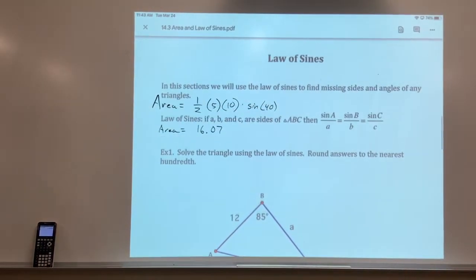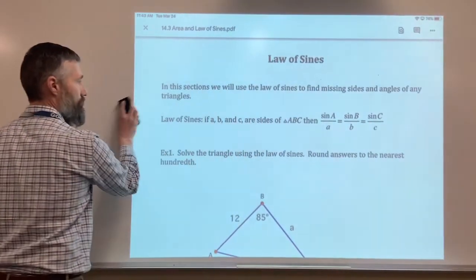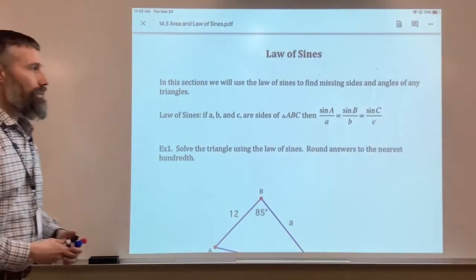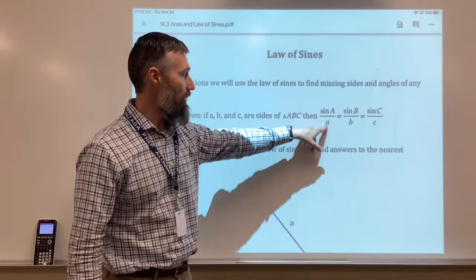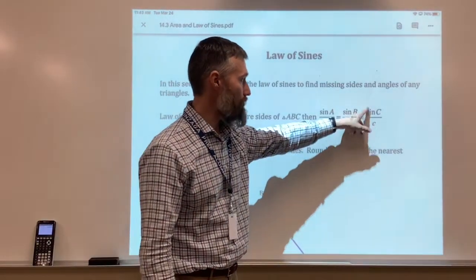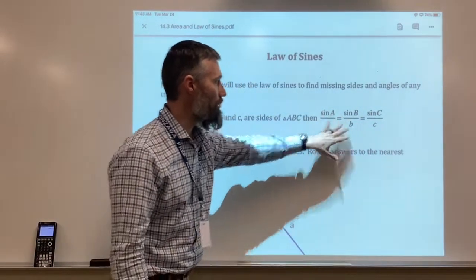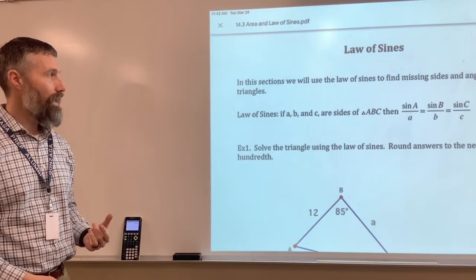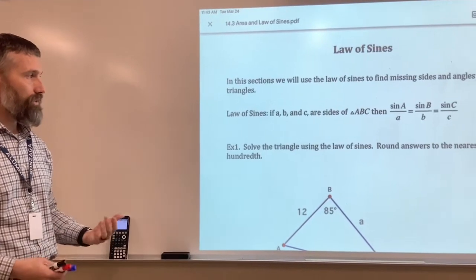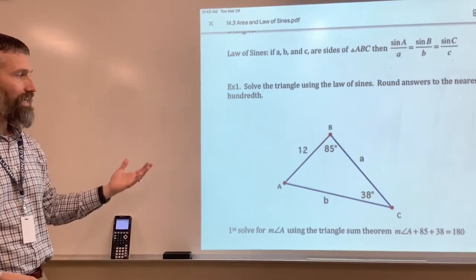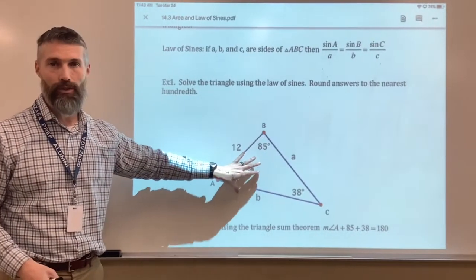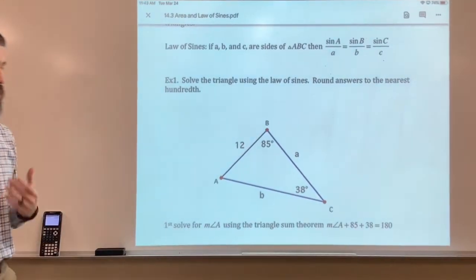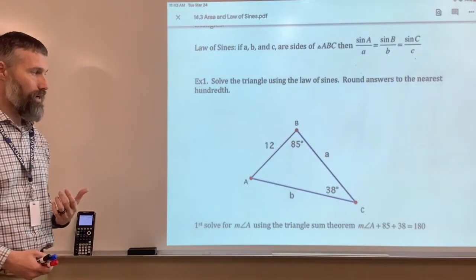We will use the law of sines, which is basically just a very simple ratio. The sine of A over A equals the sine of B over B equals the sine of C over C. We'll only use two of these. And when you're solving a ratio, all you do is cross multiply and solve. Why do we need the law of sines to do this stuff? If you're looking at this, you will notice that we are not dealing with a right triangle. The law of sines and the law of cosines are used when we're not dealing with right triangles.